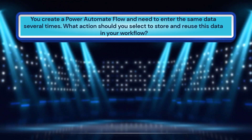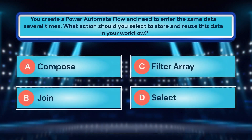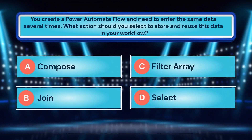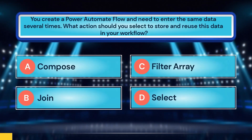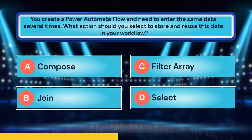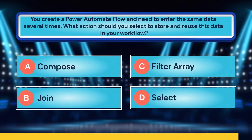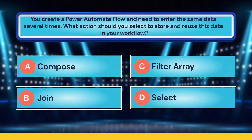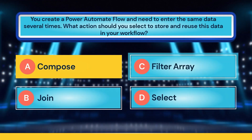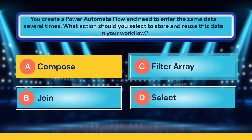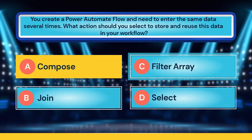You create a Power Automate flow and need to enter the same data several times. What action should you select to store and reuse this data in your workflow? A. Compose. B. Join. C. Filter array. D. Select. Time is up! The correct answer is A, compose.